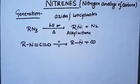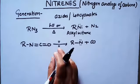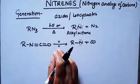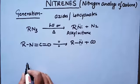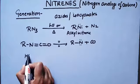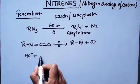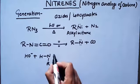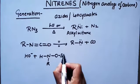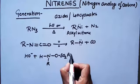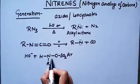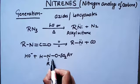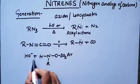Generally, there are two main methods to generate nitrenes. The first is from azides, and the second is from isocyanates. Another method uses hydroxylamine derivatives with aryl sulfonate groups: by strong base elimination of the sulfonate (O-SO2-Ar / ArSO3H group), the nitrene is generated.